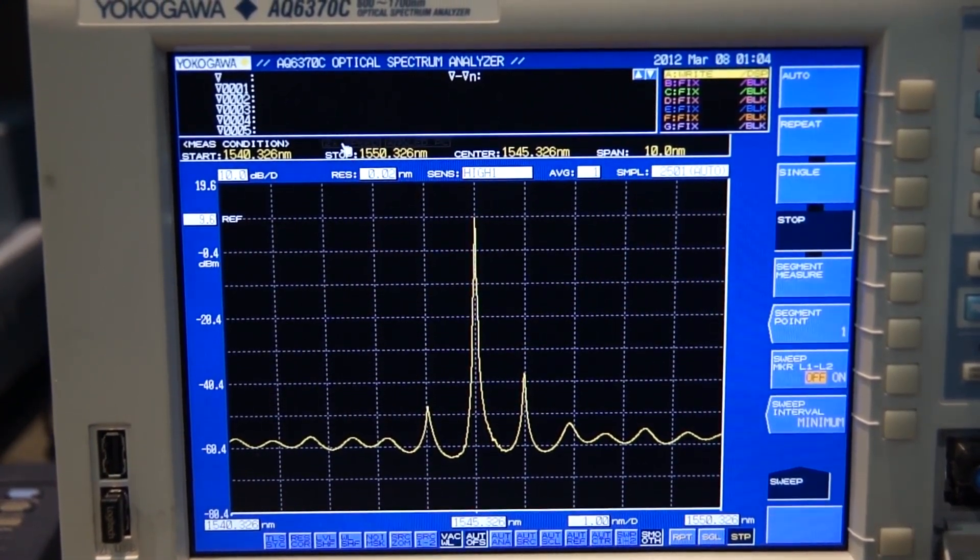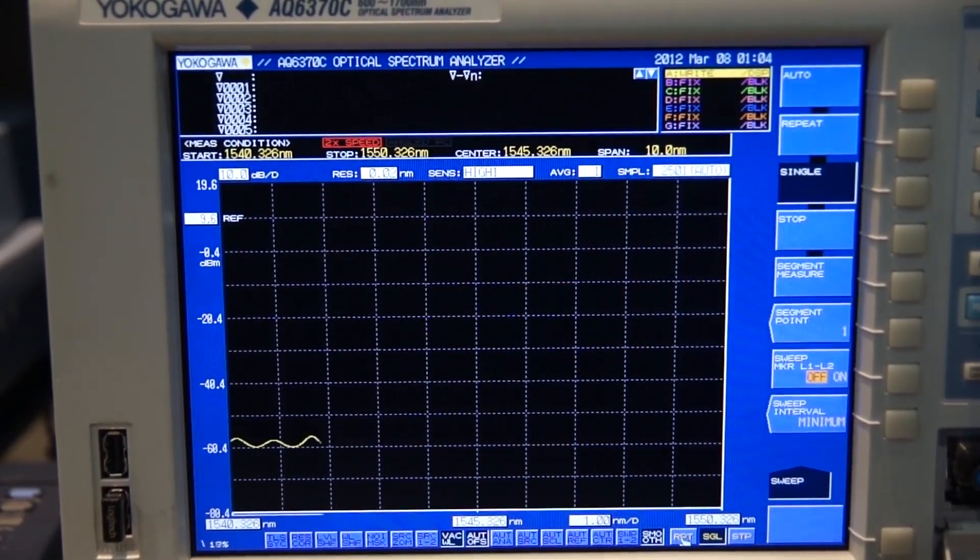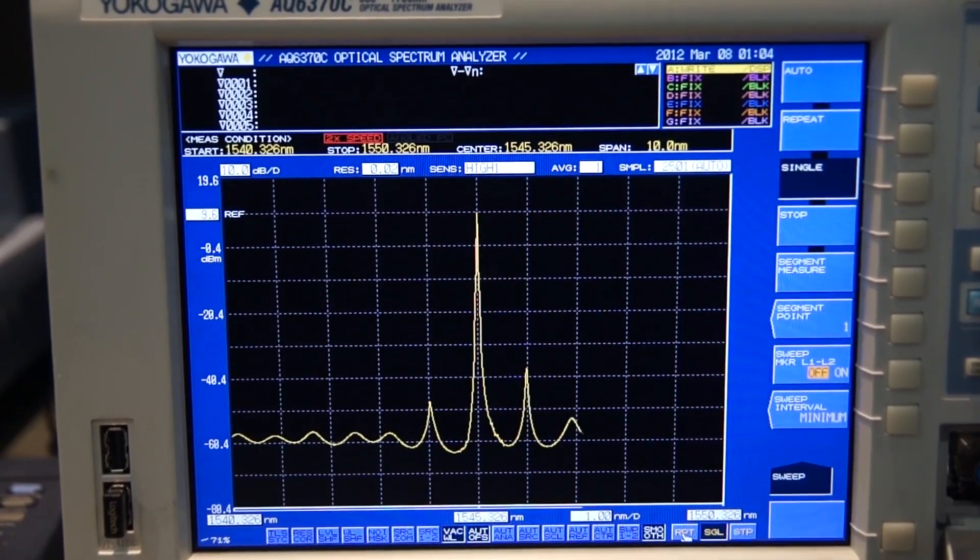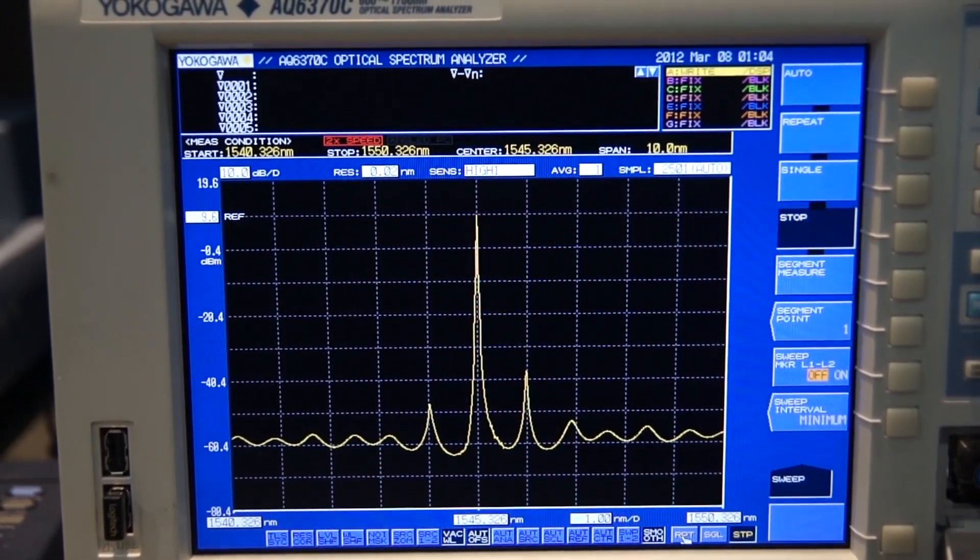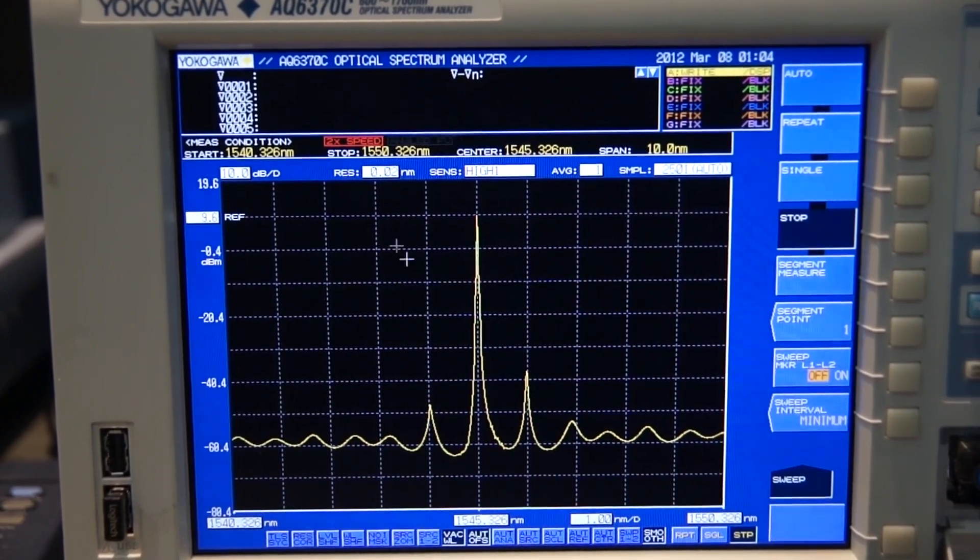What I'm going to do is simply click on this double speed mode button and do the sweep again. As you can see, it dramatically increases the speed to about half the time.